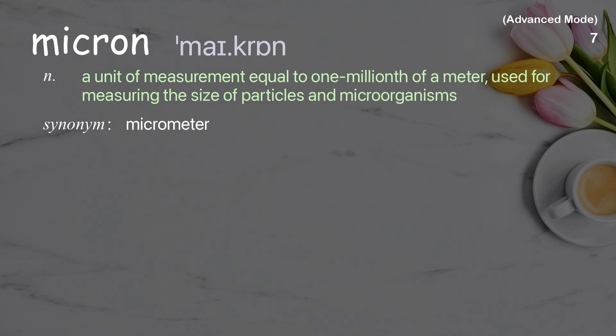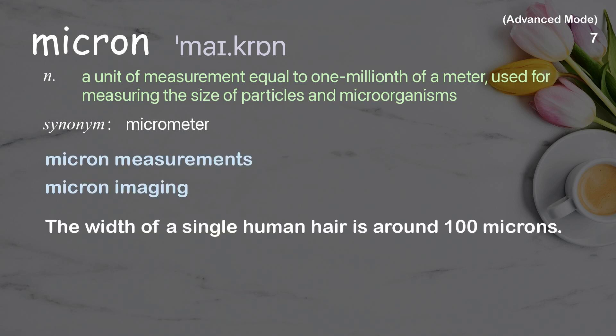Micron: a unit of measurement equal to one millionth of a meter, used for measuring the size of particles and microorganisms. Examples: Micron measurements, Micron imaging. The width of a single human hair is around 100 microns.